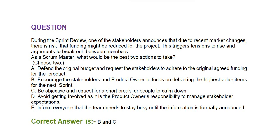Option E: inform everyone that the team needs to stay busy until the information is formally announced. The correct answer is Option B and Option C: encourage the stakeholders and product owner to focus on delivering the highest value items for the next sprint, and be objective and request a short break for people to calm down.